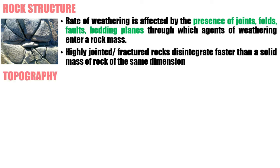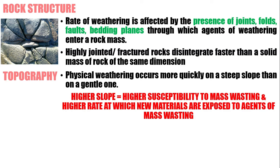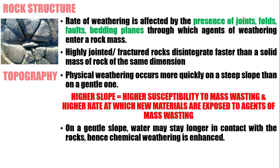Next, we have topography — this is a very tricky factor. Physical weathering occurs faster when the slope is steep, due to the higher slope's susceptibility to mass wasting and the higher rate at which new materials are exposed to agents that wash away weathered materials downslope. However, in gentle slopes, the rate of chemical weathering may be higher, because water as an agent of weathering may stay longer on gentle slopes. So: gentle slope = high chemical weathering; steep slope = high physical weathering.